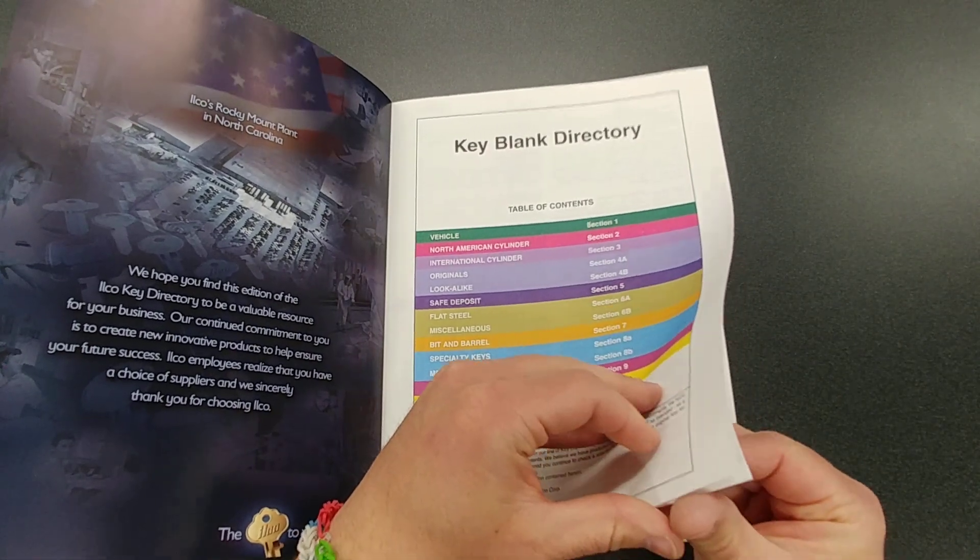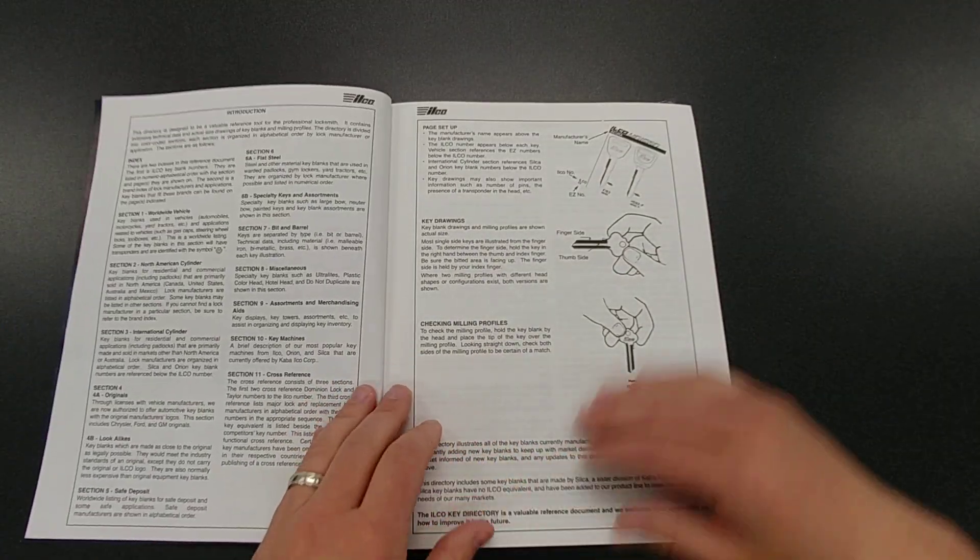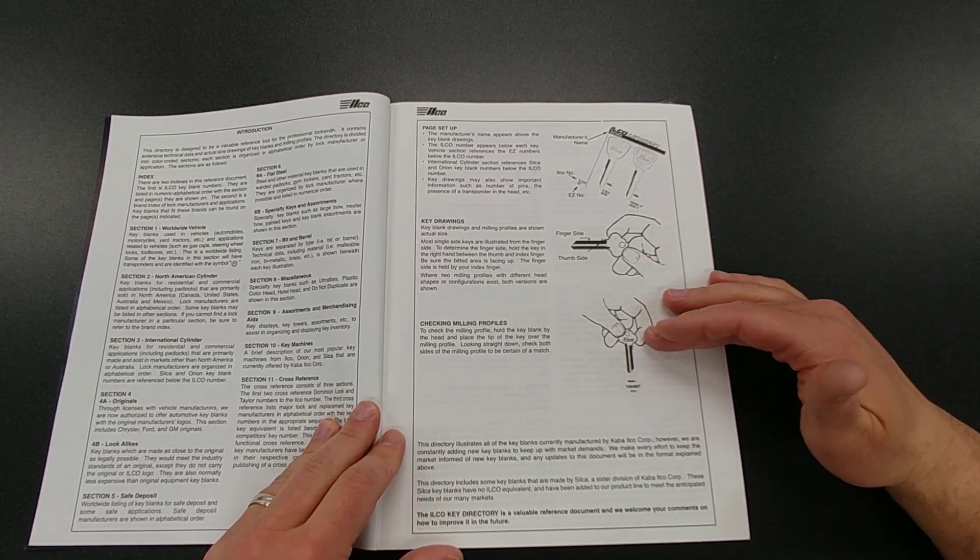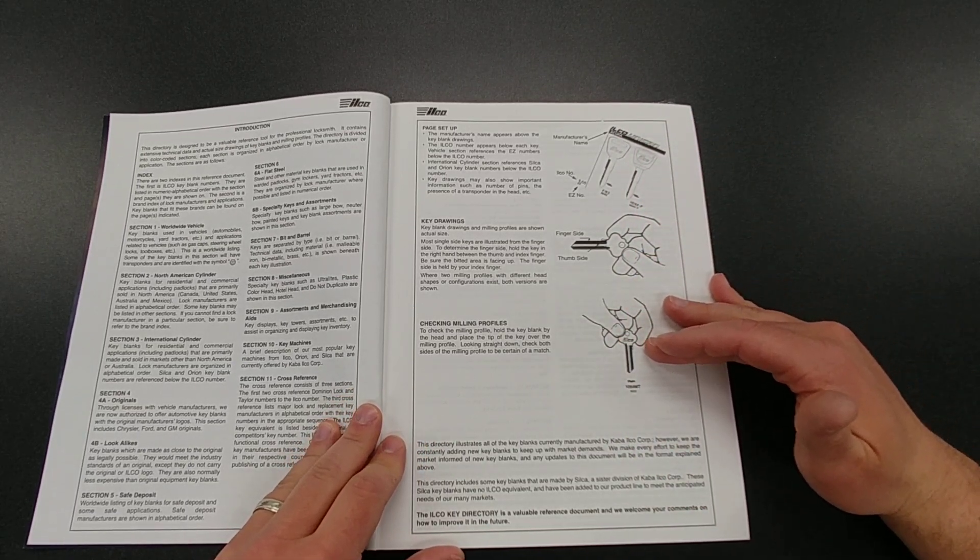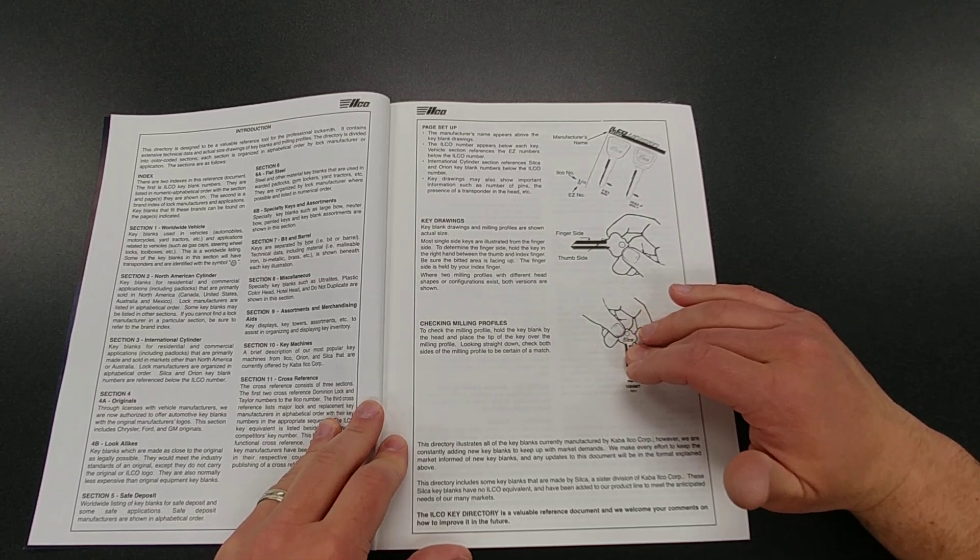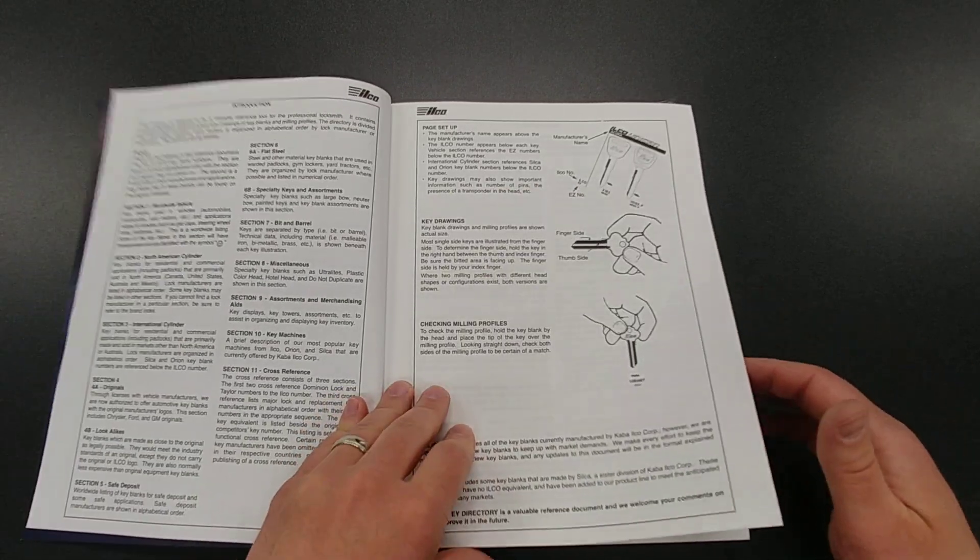Next, we're going to go on here and it's just going to kind of give you a basic overview on how it works, the page setup, the key drawings, and checking the milling profiles. This is really a big one here, checking the milling profiles. And I'm going to move to a page here and I'll kind of explain that to you.